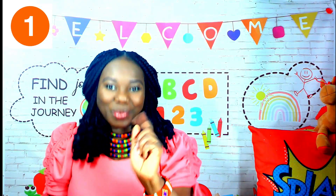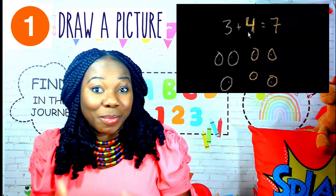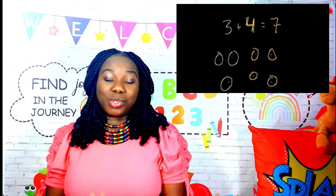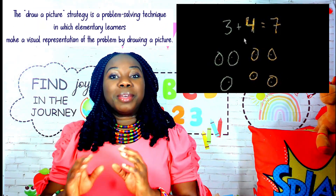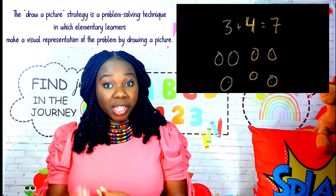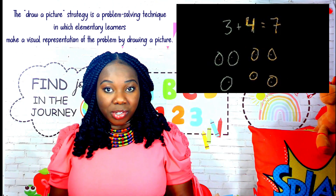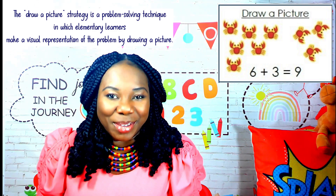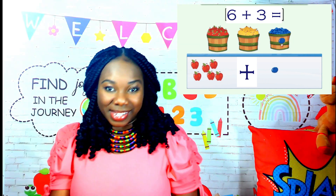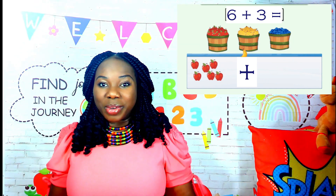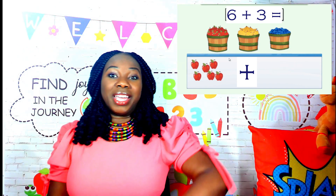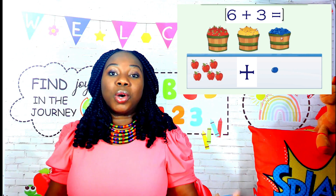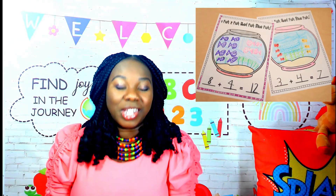Addition strategy number one: draw a picture. This is the most common strategy that most elementary learners use when trying to solve addition problems, because it allows the learner to use pictures, drawings, or illustrations to represent numbers and serves as a visual aid. For example, if we have to solve six plus three, we draw six circles and three circles and count them all up to solve the problem.